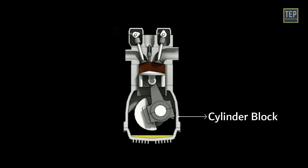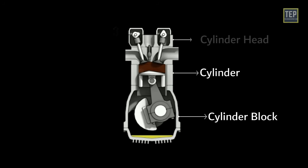Now let's understand the different parts of an IC engine. The cylinder block is the structure which contains the cylinders and other components. The cylinder is the chamber where fuel is combusted and power is generated. The cylinder head sits above the cylinders and forms the roof of the combustion chamber.